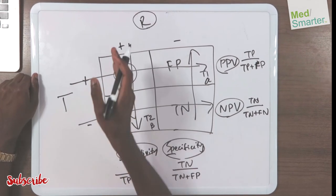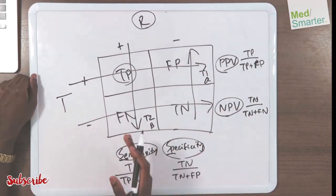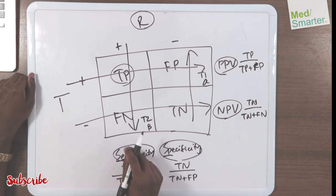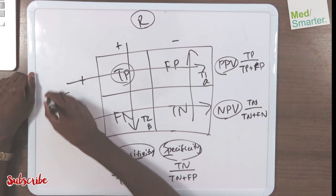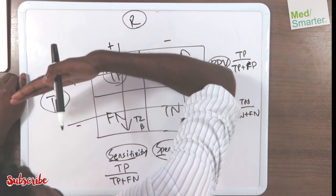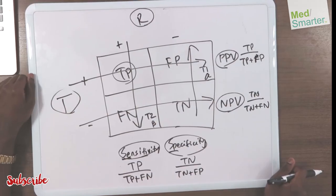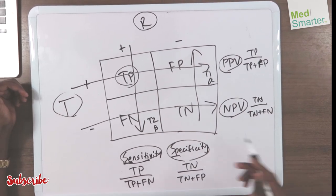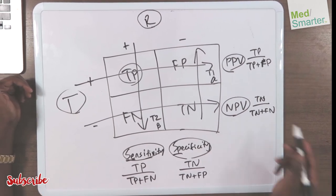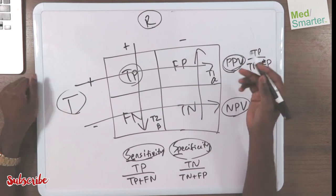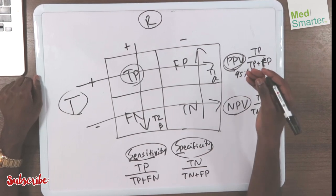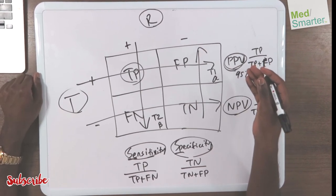For positive predictive value (PPV) and negative predictive value (NPV), think horizontal. PPV measures how accurate a positive test result is: true positive divided by true positive plus false positive. NPV measures how accurate a negative result is: true negative divided by true negative plus false negative. For example, if a patient asks how sure you are that they have diabetes, you can say the positive predictive value of the test is 95%, meaning you are 95% sure their positive result is accurate.